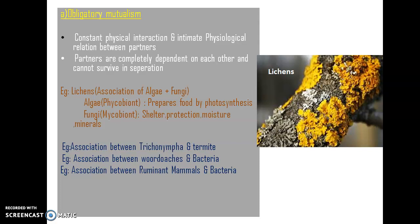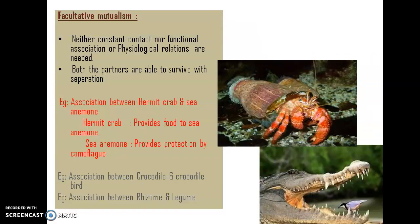Another example of obligatory mutualism is the association between Trichonympha and termites. Trichonympha is a cellulose-digesting organism found in the intestine of termites. Trichonympha gets shelter in the body of the termite, while the termite's cellulose is digested by this organism. Other examples include the association between cockroaches and bacteria, and the association between ruminant mammals — like cows — and bacteria dwelling in their stomachs.